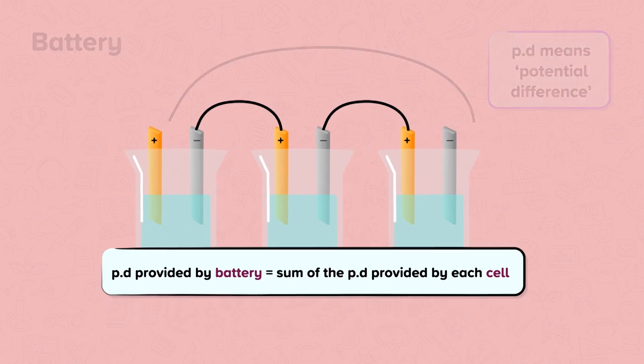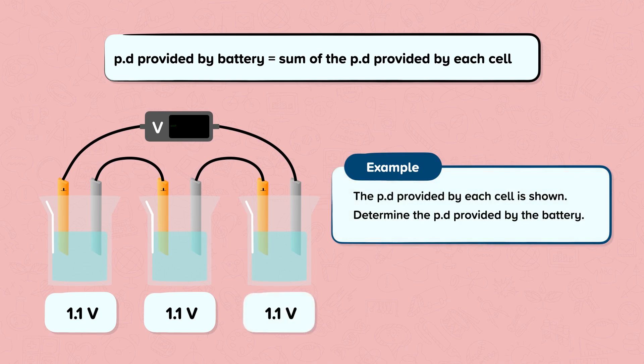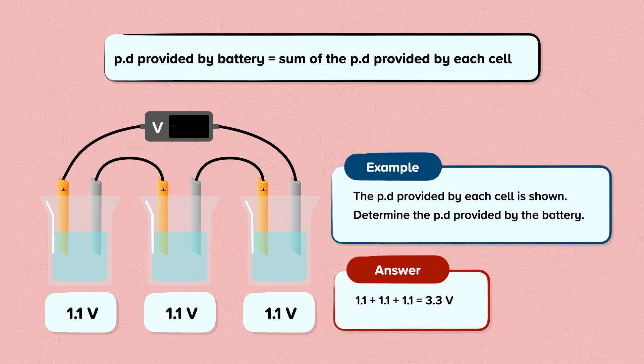Let's apply this to an example. The potential difference provided by each cell is shown. Determine the potential difference provided by the battery. The potential difference across each cell is 1.1 volts. So the potential difference provided by the battery is calculated by adding these up: 1.1 plus 1.1 plus 1.1 is equal to 3.3 volts. So the potential difference provided by the battery is 3.3 volts.